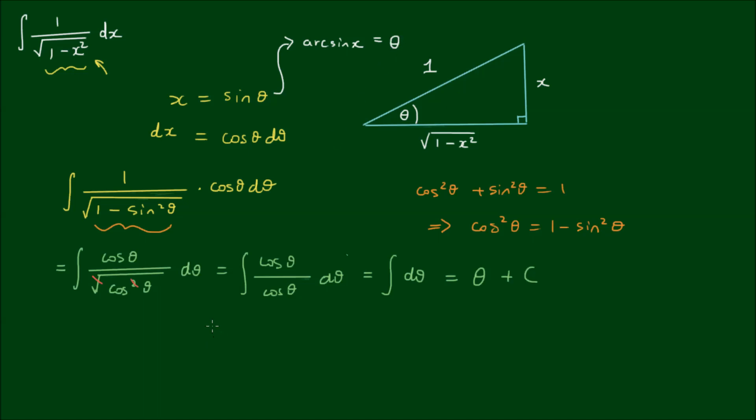That then gives our final answer as the integral of 1 divided by the square root of 1 minus x squared dx as being equal to the arc sine of x plus the integration constant c.